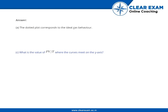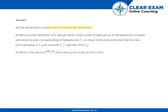The dotted plot corresponds to the ideal gas behavior. We know that the behavior of a real gas tends close to that of an ideal gas as its temperature increases, and since the plot corresponding to temperature T1 is closer to the horizontal line than the one corresponding to T2, we conclude that T1 is greater than T2.